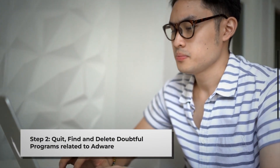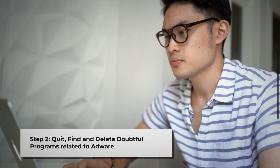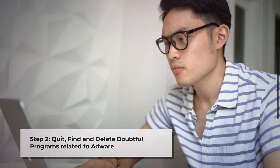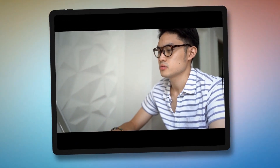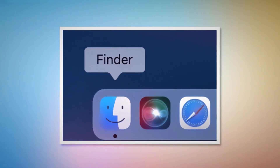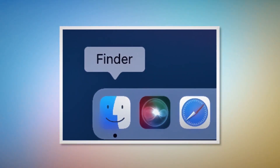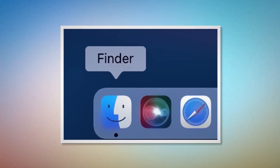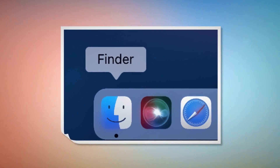Step 2: Quit, Find, and Delete Doubtful Programs related to adware. Firstly, check the menu bar of your Mac. If you find any unknown program icon there, right-click the icon and then click Quit. After that, click on Finder on the bottom menu dock of your Mac, as shown in the screenshot.